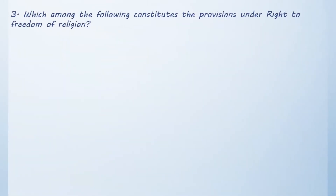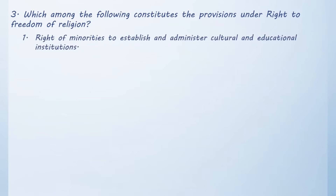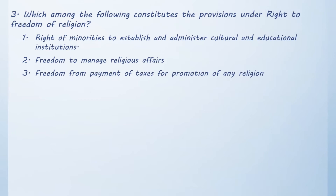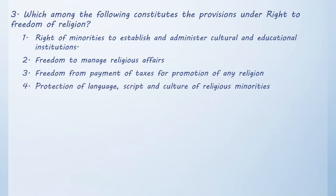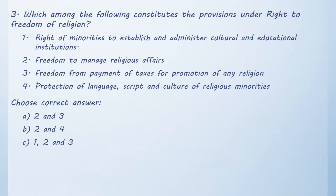Next question: which among the following constitutes the provisions under the Right to Freedom of Religion? Statement 1: Right of minorities to establish and administer cultural and educational institutions. Statement 2: Freedom to manage religious affairs. Statement 3: Freedom from payment of taxes for promotion of any religion. Statement 4: Protection of language, script, and culture of religious minorities. Options: A) 2 and 3, B) 2 and 4, C) 1, 2 and 3, D) 2, 3 and 4. The correct answer is Option A, 2 and 3.